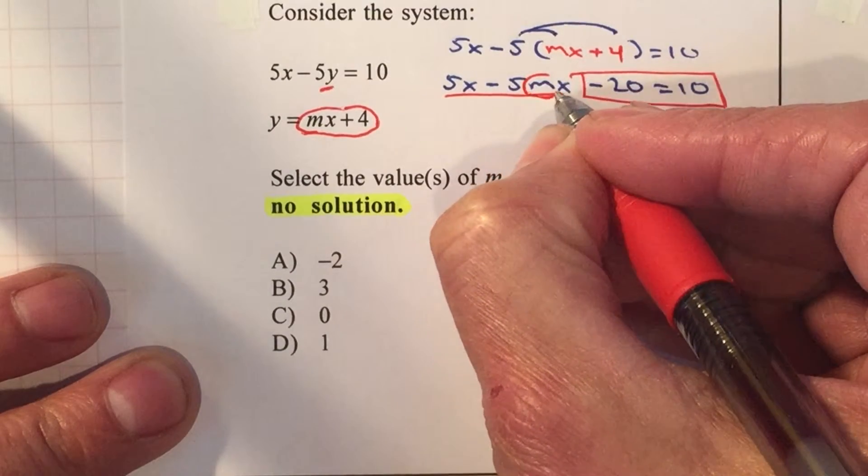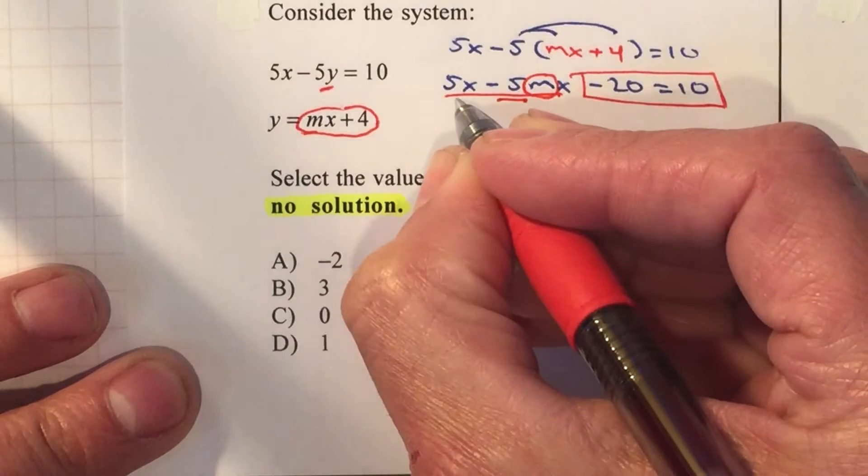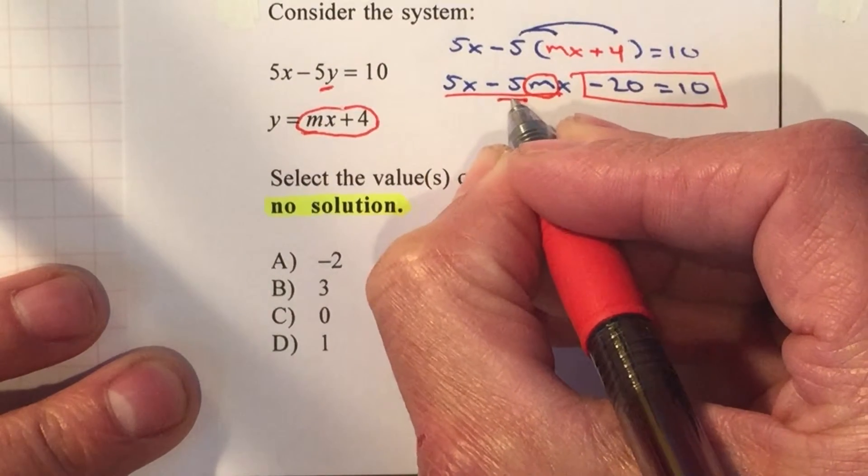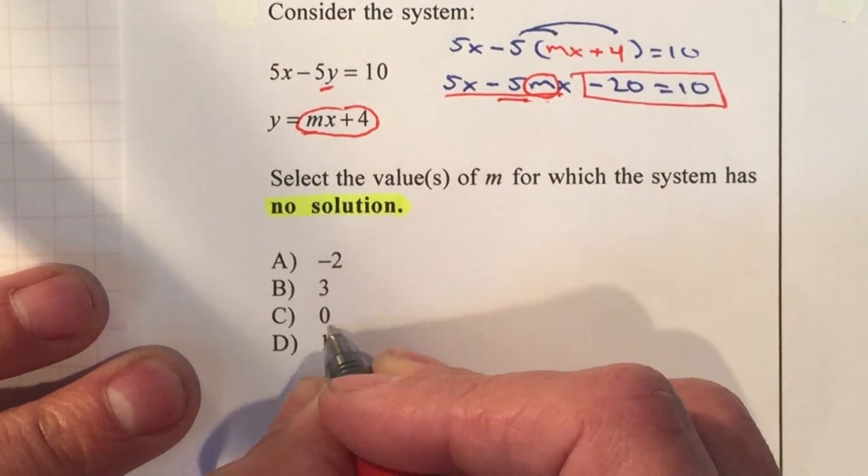So what will be the value of m that whenever you multiply by negative 5, you cancel with the 5x? Therefore we want this to be negative 5x, so therefore the only value of m will be equal to 1.